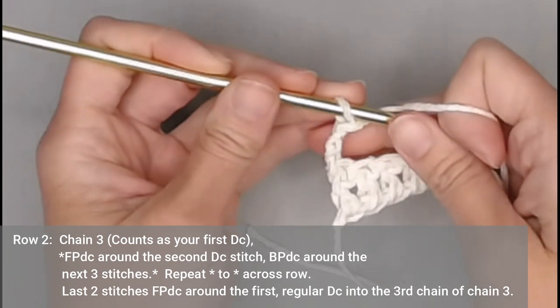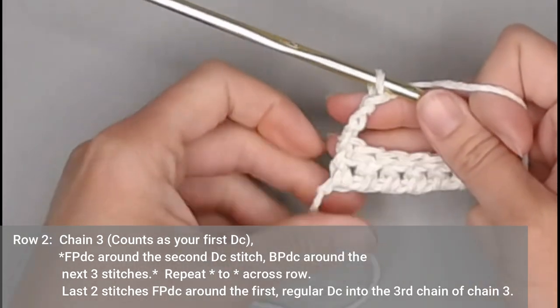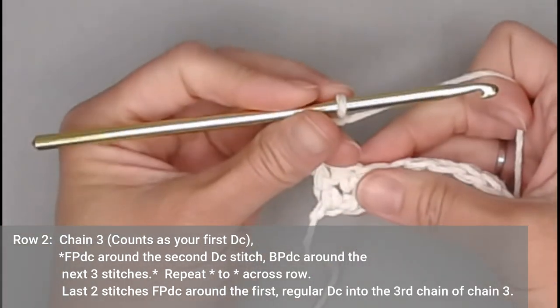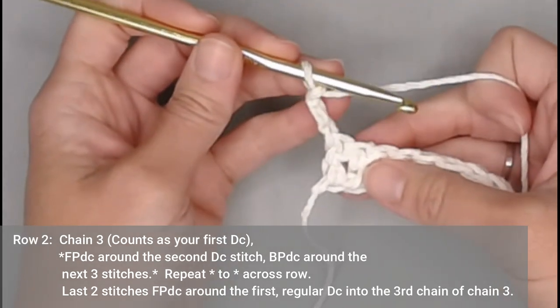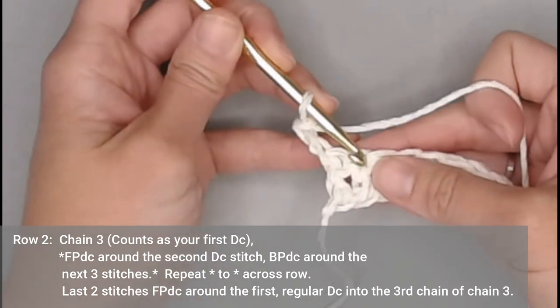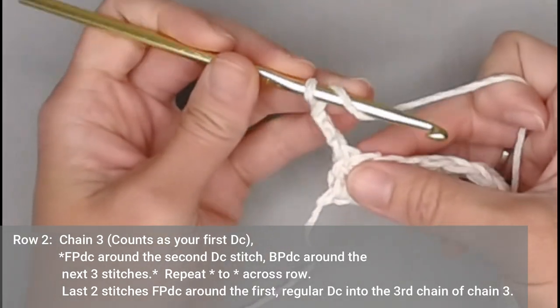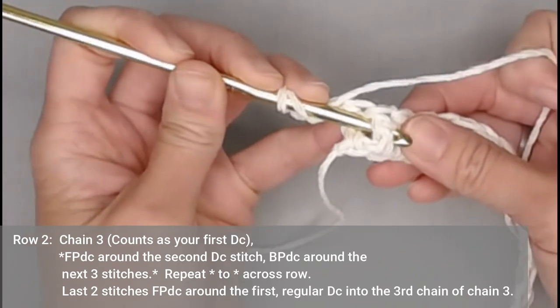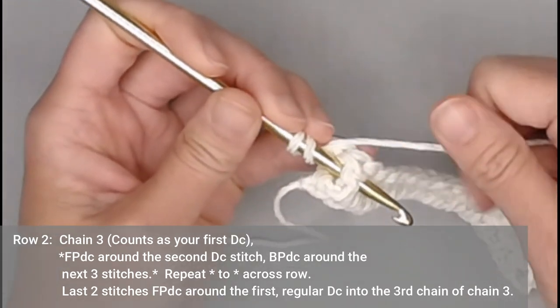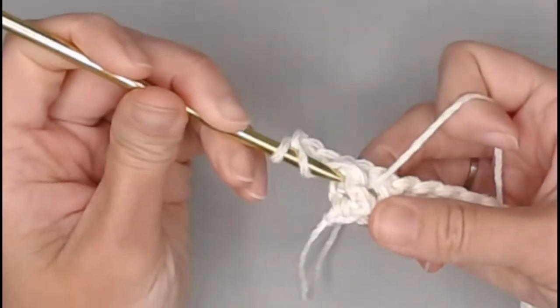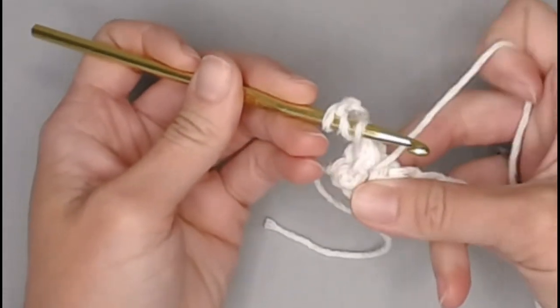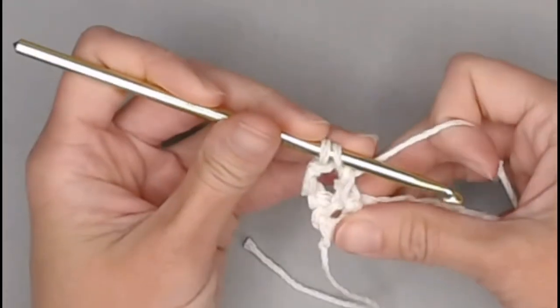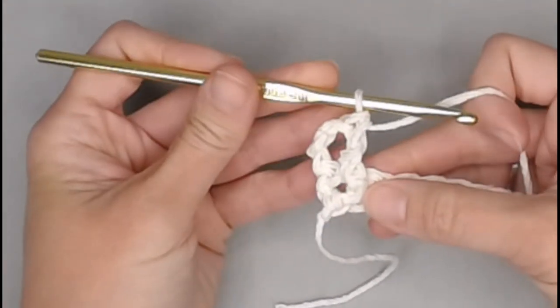That chain three counts as our very first stitch, our very first double crochet. It will actually take the space of the first stitch. Our next stitch will be a front post double crochet made around the second double crochet stitch. So yarn over, insert our crochet hook into the side space of the stitch. Go behind and come out the other side of the stitch. Yarn over, pull that yarn through, so it's like flossing behind that stitch. Yarn over, pull through two, yarn over, pull through two, and that's what we're looking at.